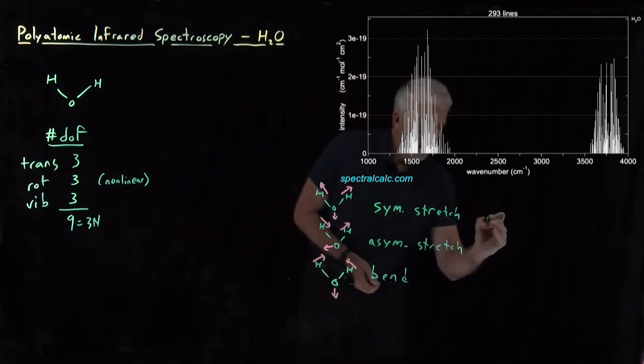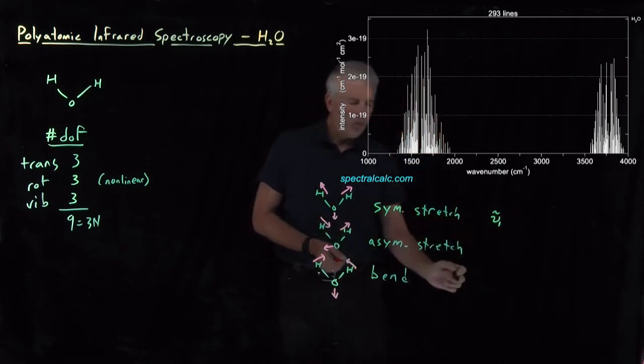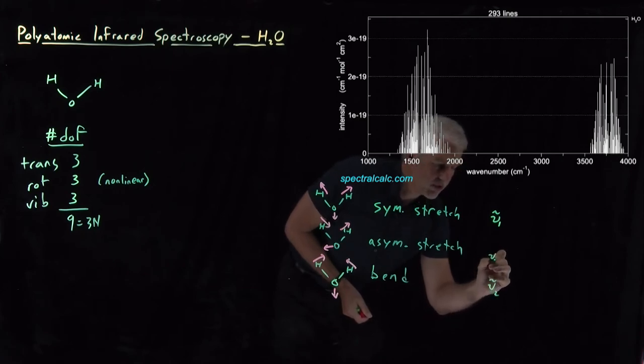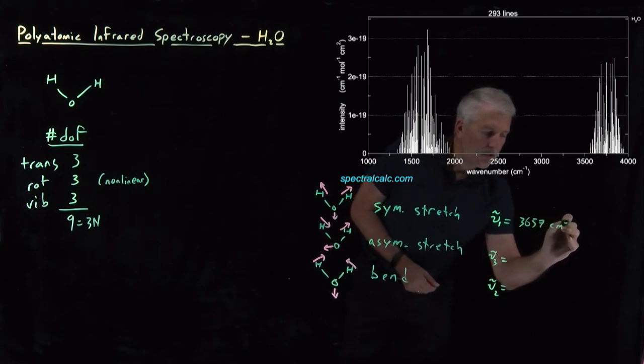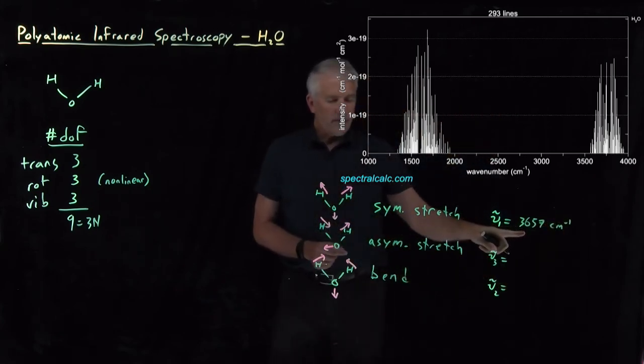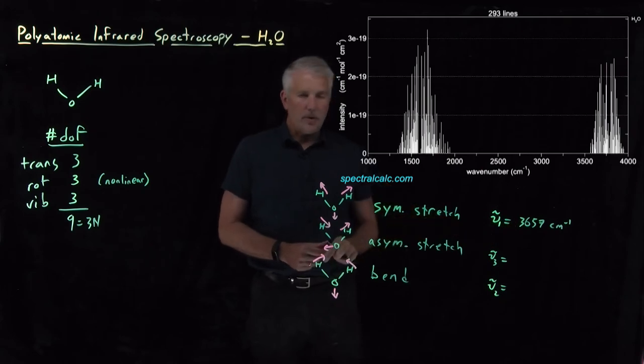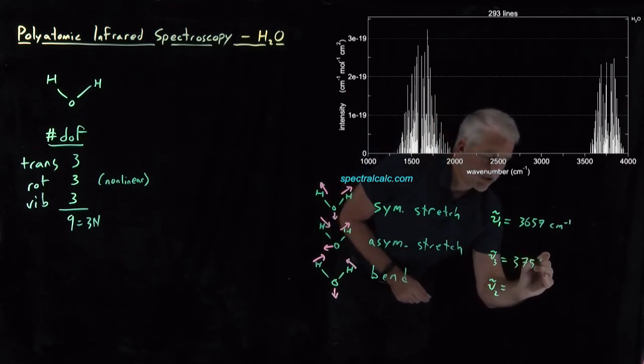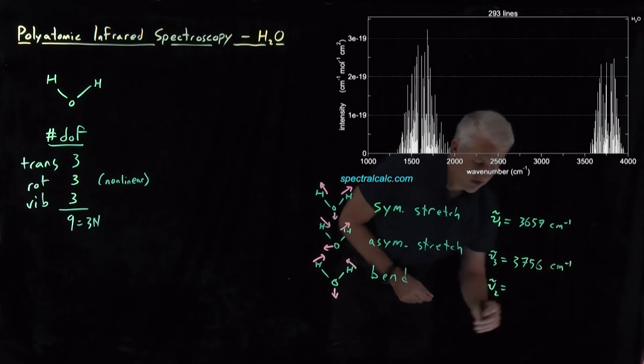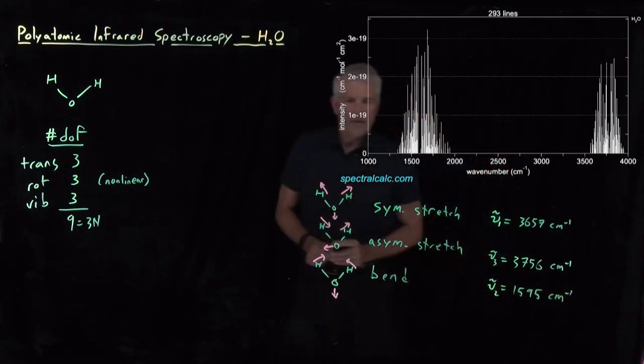If I tell you what the frequencies are, we can give these numbers. Traditionally, we call the symmetric stretch mode number one, the bending mode is mode number two, and the asymmetric stretch is mode number three. In wave numbers, the vibrational frequencies are 3657 wave numbers for the symmetric stretch. That's a relatively high frequency because the hydrogens are so light. The reduced mass is very small, so that makes the vibrational frequencies relatively high. The asymmetric stretch also involves hydrogen motion, so it's also a very high vibrational frequency, 3756 wave numbers, and the bending motion, 1595 wave numbers.